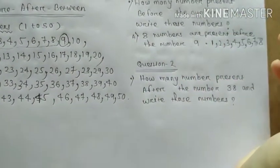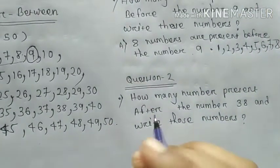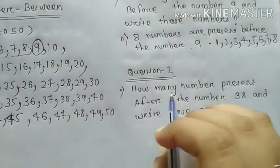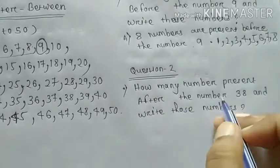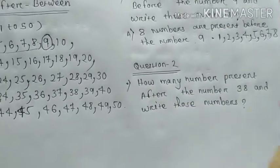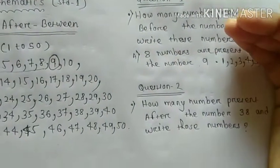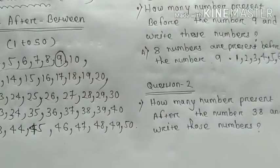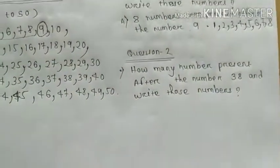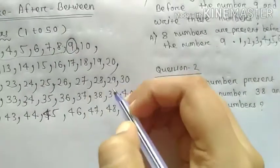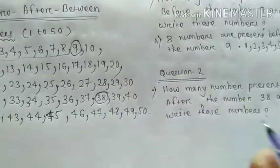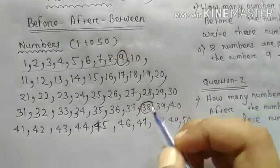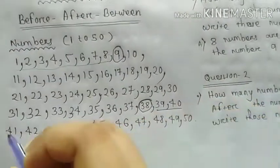Then question number 2. Question number 2. How many numbers present after the number 38? How many numbers present after the number 38 and write those numbers. After the number, after means after the number. So the number 38, round up. So how many number present after the number? After 38.